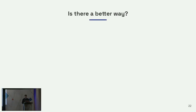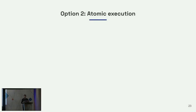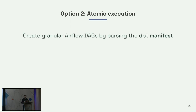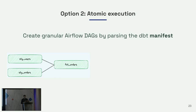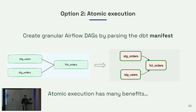So is there a better way? Consider this sample DBT project — for all the Airflow users in the room, what does this look like to you? This DBT project is a DAG — DBT projects are DAGs, no different than Airflow DAGs. And so this leads to a different mode, which I call atomic execution mode. Atomic execution means you create granular Airflow DAGs by parsing the DBT manifest into separate tasks. So if you take this example DBT project with three models, that gets transformed into an equivalent Airflow DAG where each task corresponds to a single model and these run independently.